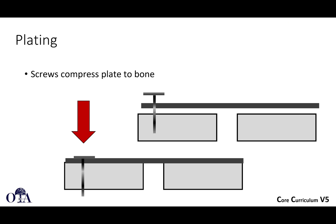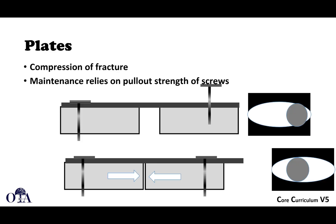Screws can compress a plate to bone. If you use a standard cortical screw and the plate is contoured perfectly to how the bone should be, the screws can indirectly help the plate reduce the fracture — this is a useful reduction technique.